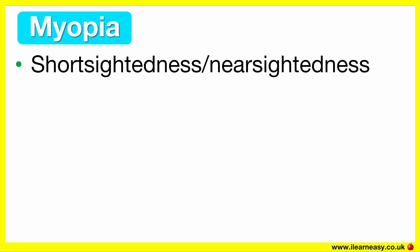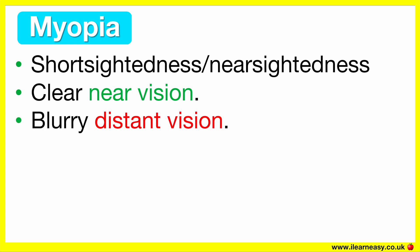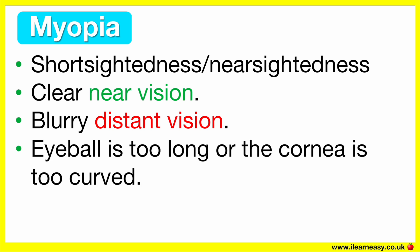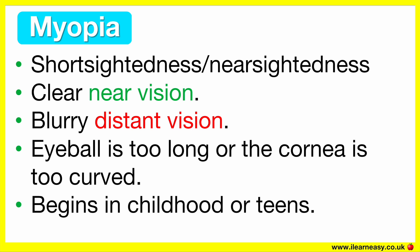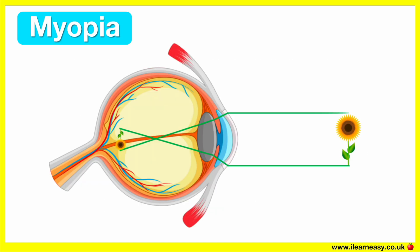Myopia is also known as short-sightedness or near-sightedness. In simple terms, it's when a person has clear near vision but blurry distant vision. The cause of myopia is that the eyeball is too long or the cornea is too curved. This usually begins in childhood or teens, and it can worsen over time. With myopia, light focuses in front of the retina, so distant objects appear blurry, but near objects appear clear.